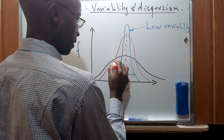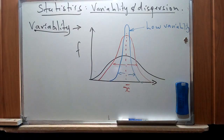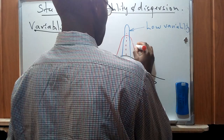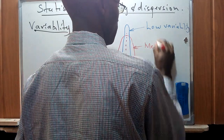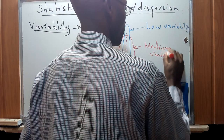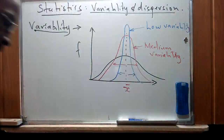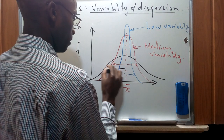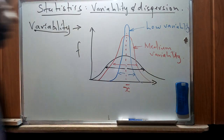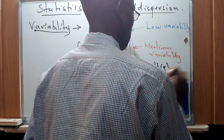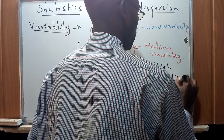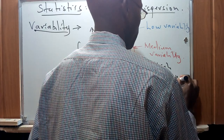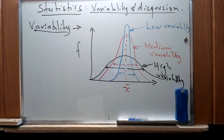For the second distribution curve, which extends from the center of distribution to a moderate distance, this is going to have a medium variability with respect to the other two. For the last one, which has a much wider spread from the center of distribution, this is going to have a high variability. This illustrates the concept of variability — how far apart the data lies from the midpoint.